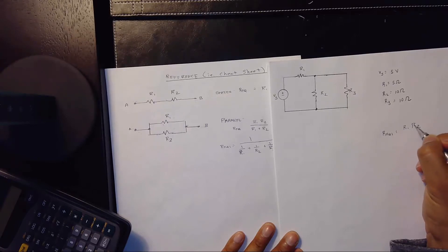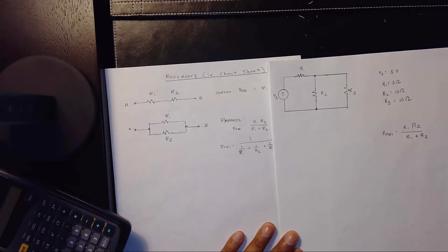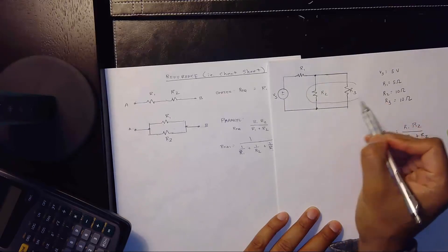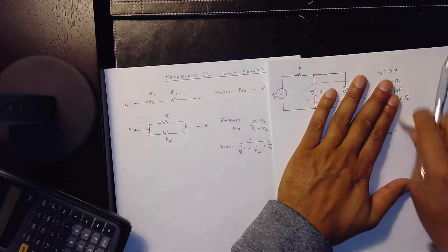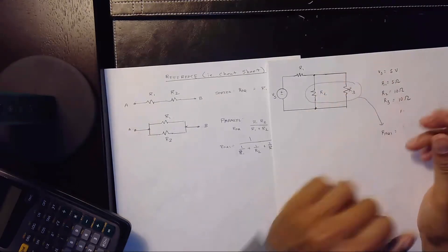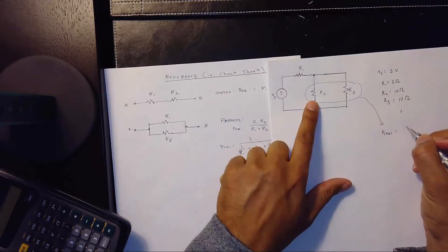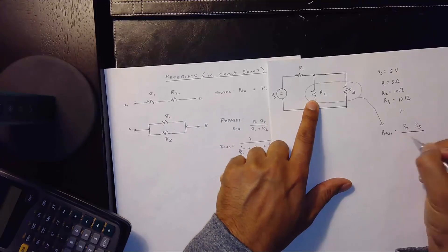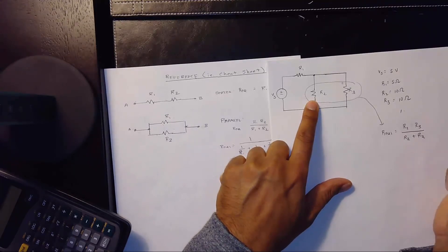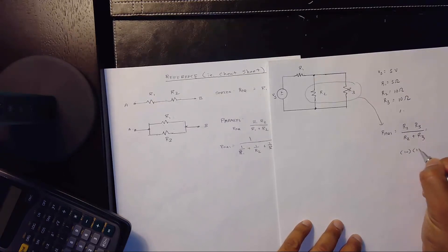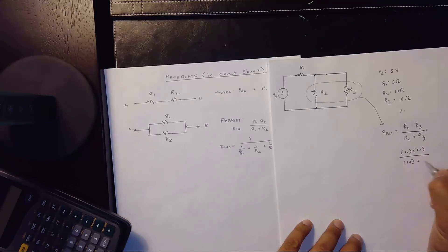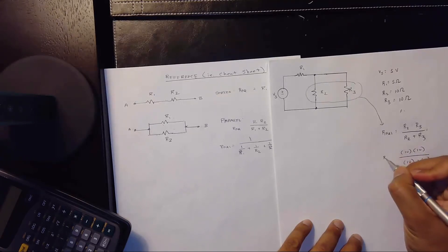Now we apply the values. In this circuit the parallel combination is actually R2 and R3, so the equation becomes REQ1 equals R2 times R3 divided by R2 plus R3. Plugging in values: that's 10 times 10 over 10 plus 10, giving us 100 over 20.